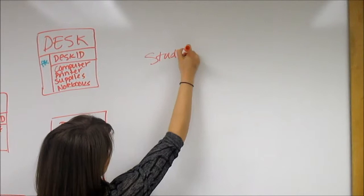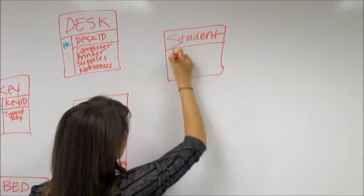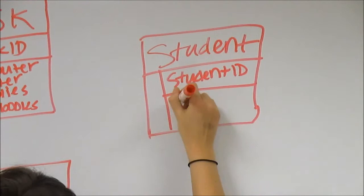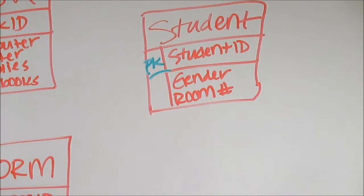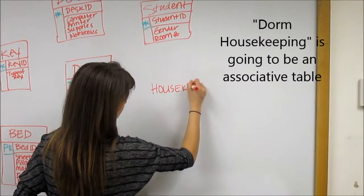We now move to our next entity of student. Identify the primary key of student ID, and below it, list the attributes, including gender and room number. Remember to identify your primary key with a PK to the left of the attribute.